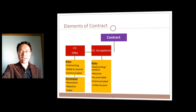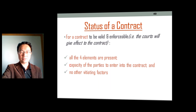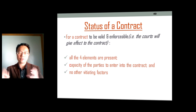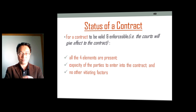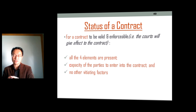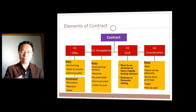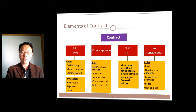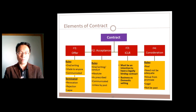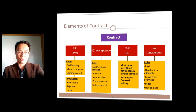So here you have the four elements of contract. In order for a contract to be valid and enforceable, you need all four elements. The parties must also have the capacity to enter the contract. The four elements are: offer, acceptance, intention to create a legal contract, and consideration. This is the end of part one — continue watching and we'll go to part two.